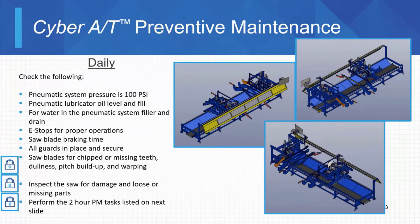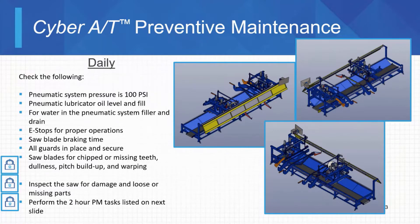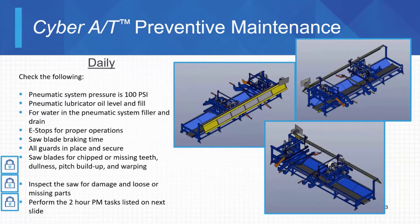The next thing we want to do is start each saw blade individually and stop it, making sure that it stops within three seconds. Number five and number six blades are a little bit bigger, so they're going to take a little bit longer to stop — but it should be within three to four seconds. We want to walk around the machine and make sure that all of our guards are in place and that they're secure. We also want to take a look at saw blades and make sure that none of them are chipped or missing teeth. Dullness, pitch buildup, and warping — we need to take a look at that as well. The easiest way to notice if a saw blade is warped is when it slows down — you'll notice it wobble as it's slowing down.